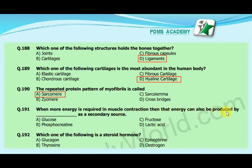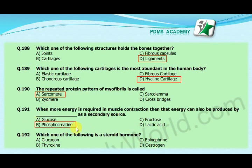Our next MCQ is: when more energy is required in muscle contraction, that energy can also be produced by which one of the following as a secondary source? Option A: glucose, option B: phosphocreatine, option C: fructose, option D: lactic acid. Our correct answer is B, phosphocreatine.